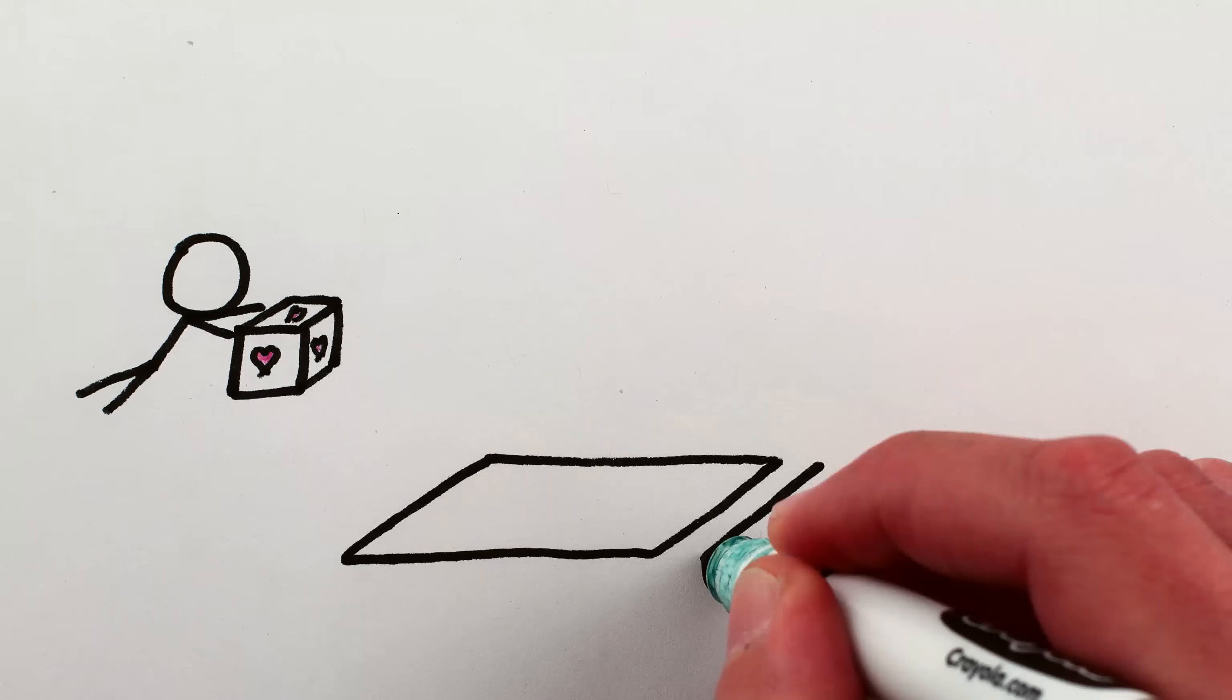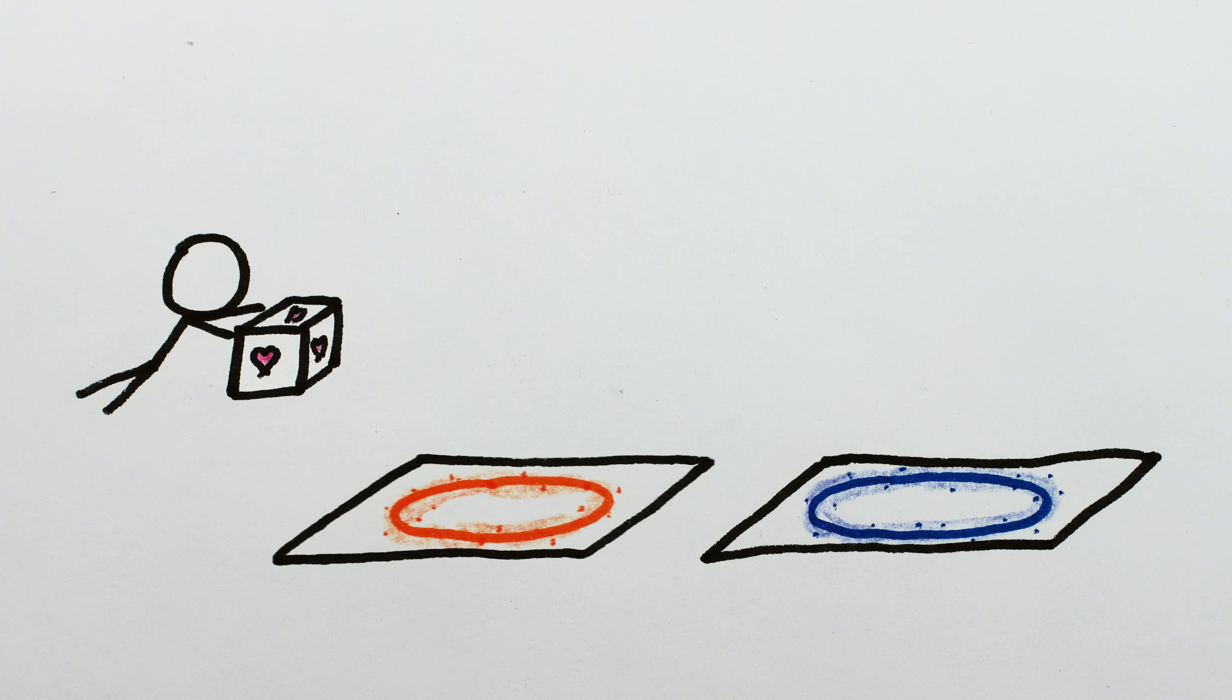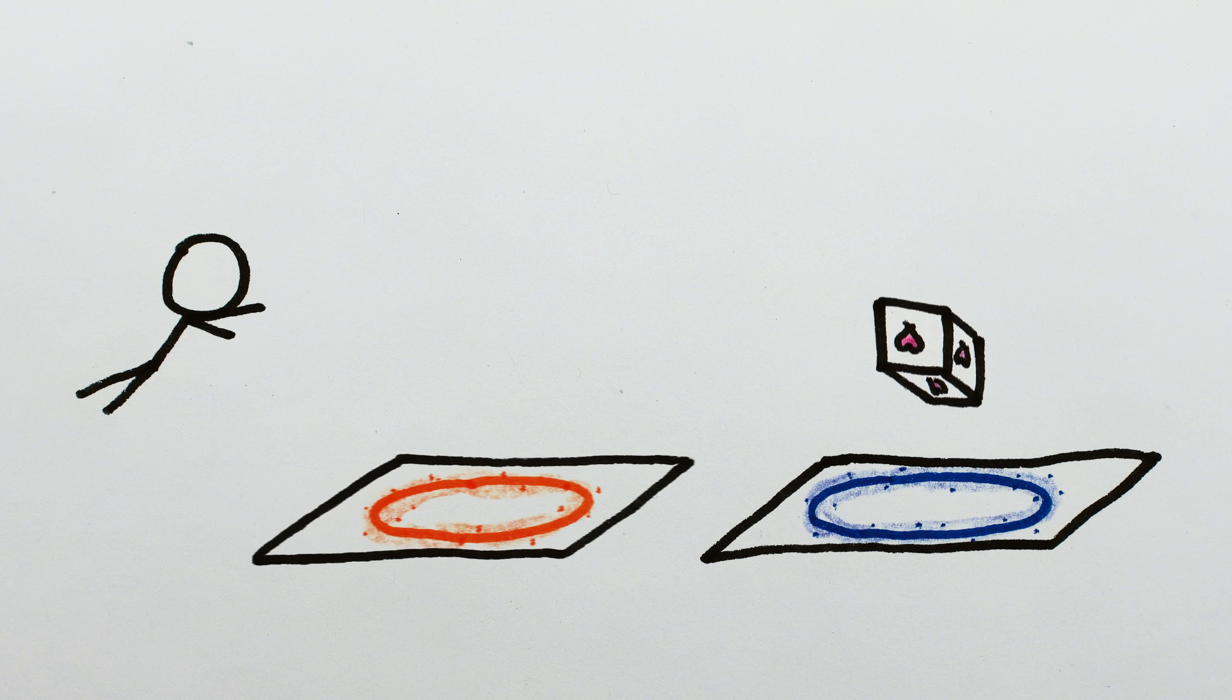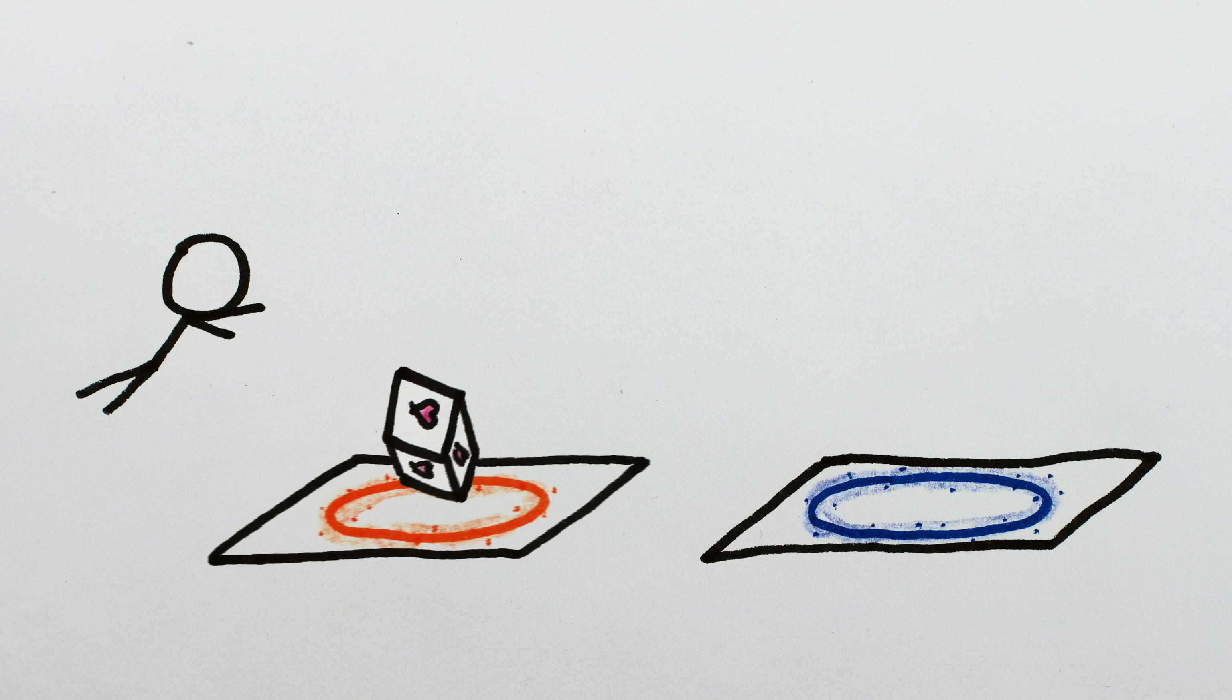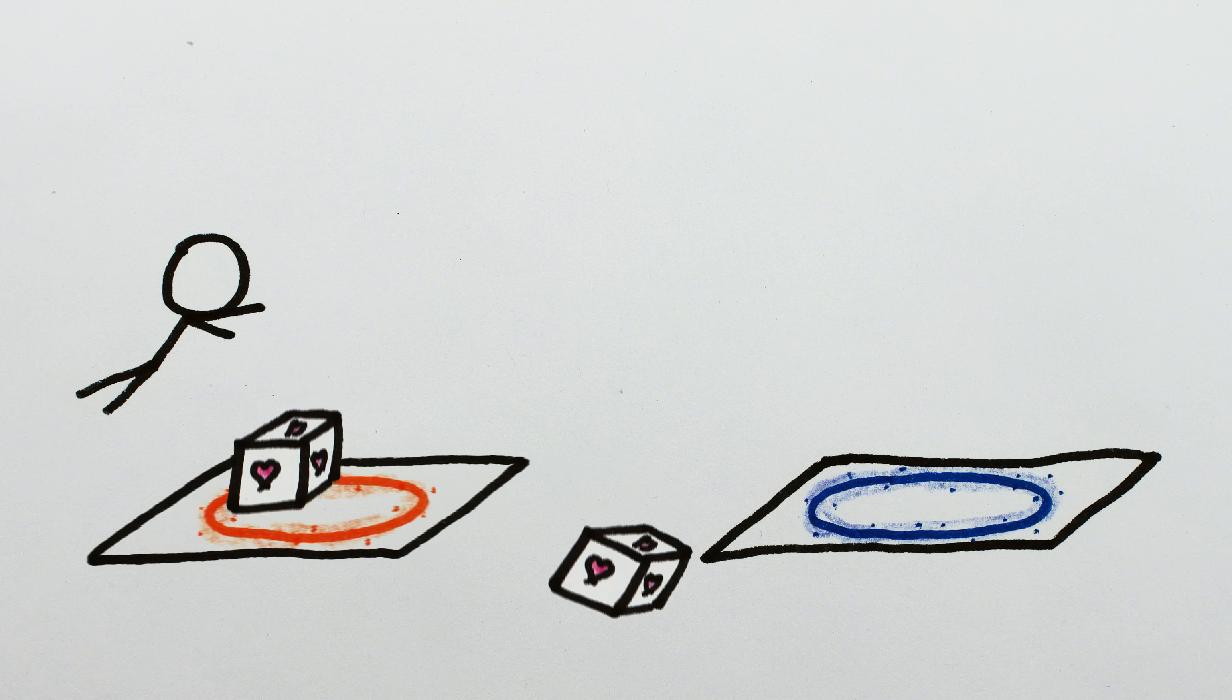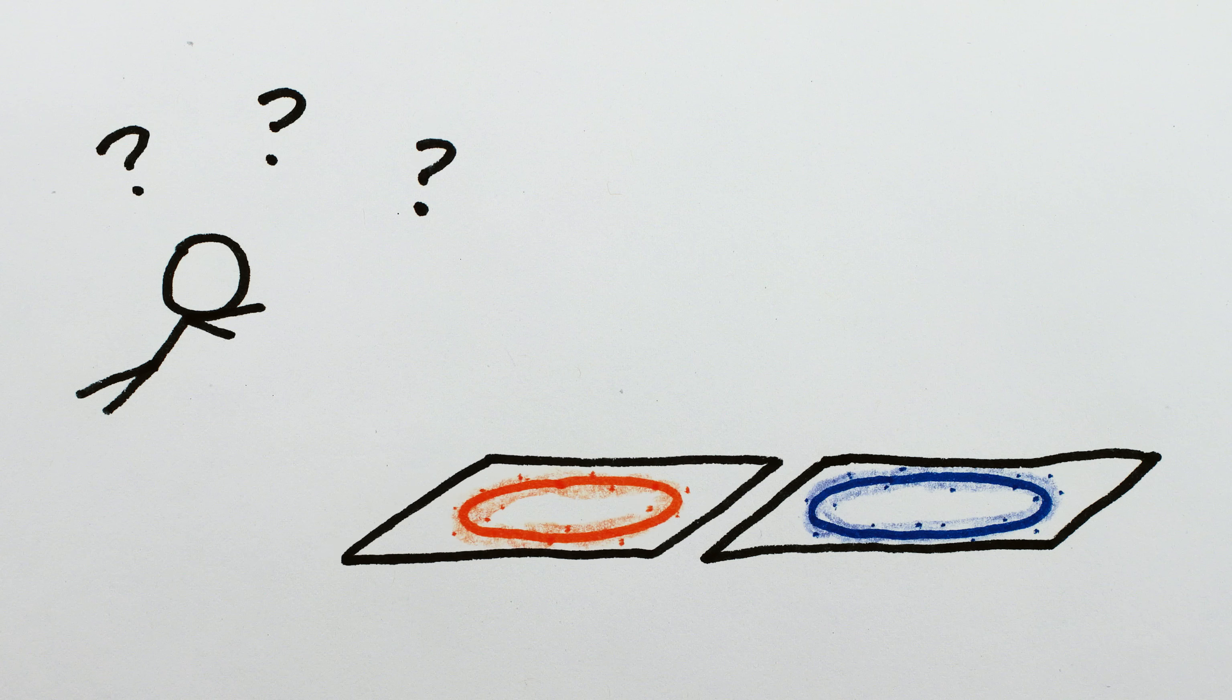What if instead of moving down towards the cube, the orange portal is moving sideways on the ground, and you drop the cube through it? Does the cube shoot straight up through the blue portal? Does it bounce off of the orange portal? Or, does it shoot out of the blue portal at an angle? Does it bounce off of the blue portal?